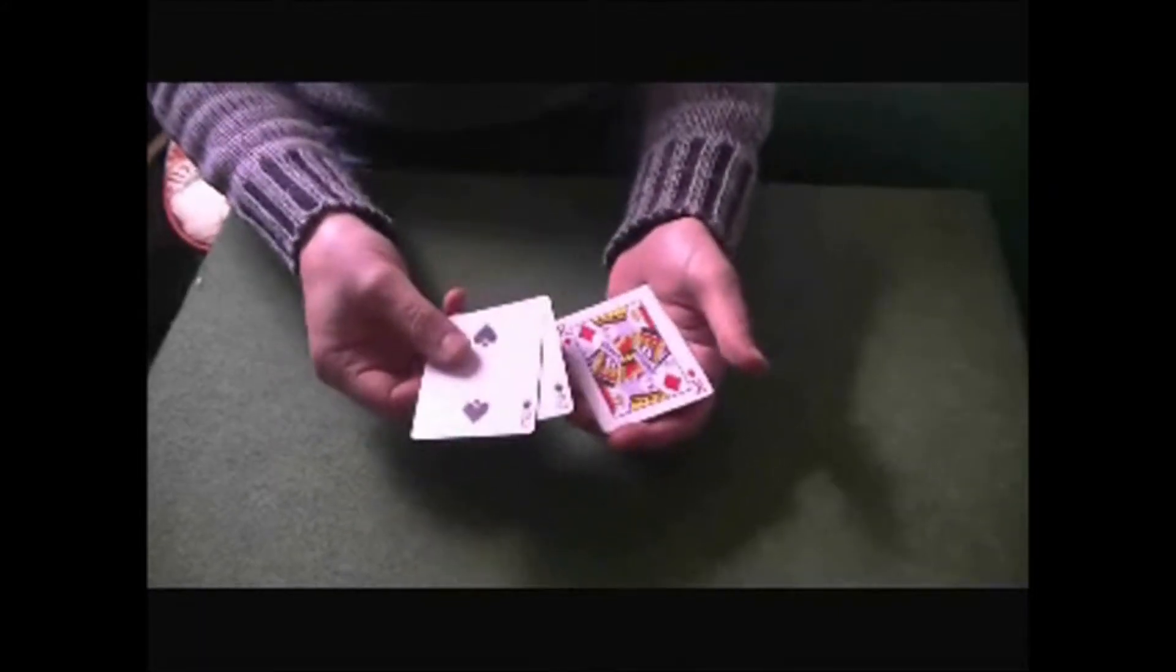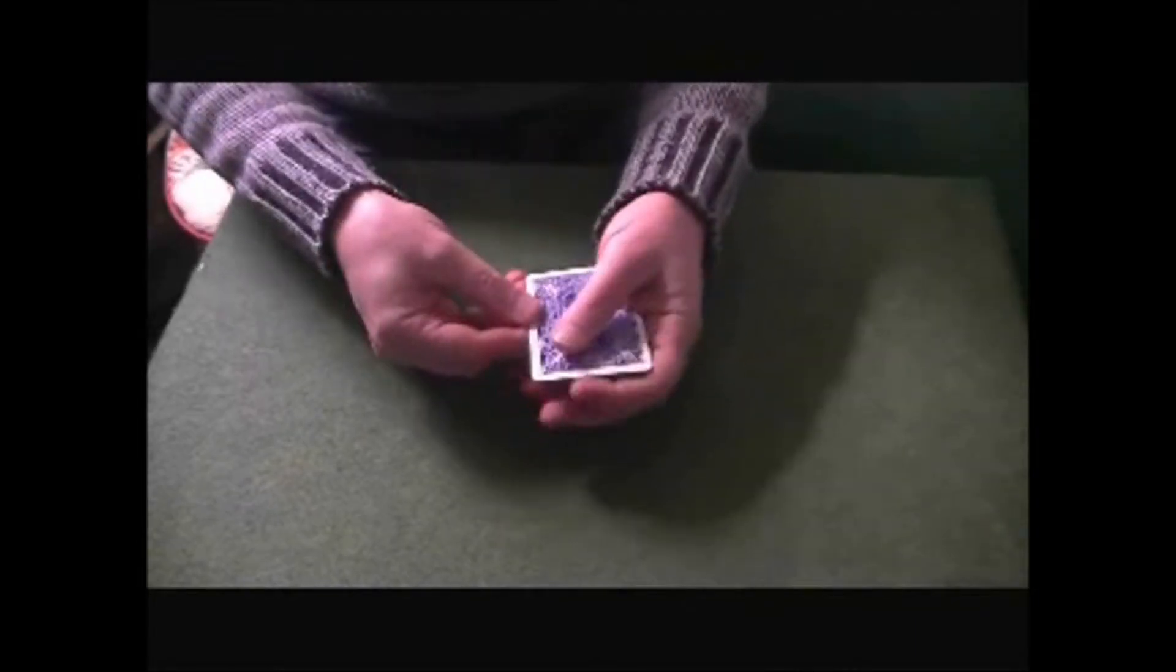The King of Diamonds is what they call the money card, which I'll leave at the face of the packet. If I turn the packet face down, it should be on the bottom. If I reverse the order like so, that should bring it to the top.